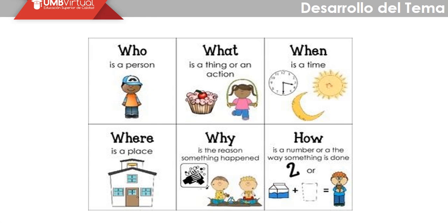Now let's look at WH questions. WH questions refer to the word that determines the condition or purpose of the question we are going to ask. When we use 'who,' it is because we want to ask about the person performing an action — for example, 'Who is checking the homework?' or 'Who is playing soccer?' 'What' refers to a thing or an action — 'What's your name?', 'What's your telephone number?', 'What's your favorite color for clothing?'